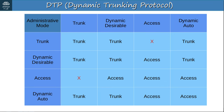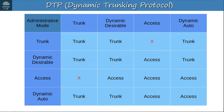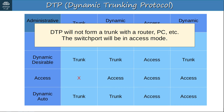A chart summarizes the resulting operational mode given two administrative modes. A switchport in dynamic desirable mode will form a trunk with an interface in any administrative mode except access. Also, DTP will not form a trunk with a router, PC, etc. — the switchport will be in access mode. So if you want to configure router-on-a-stick, you must manually configure the interface connected to the router as a trunk.